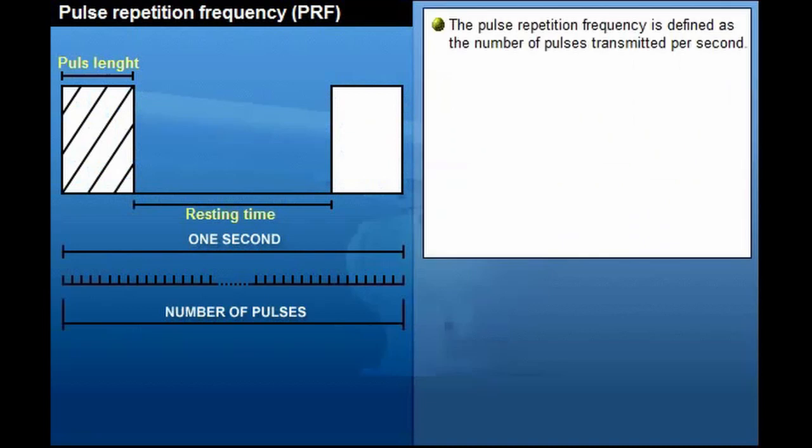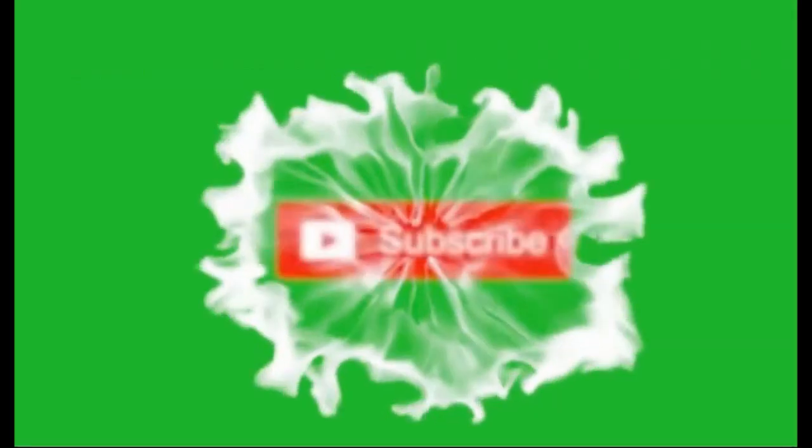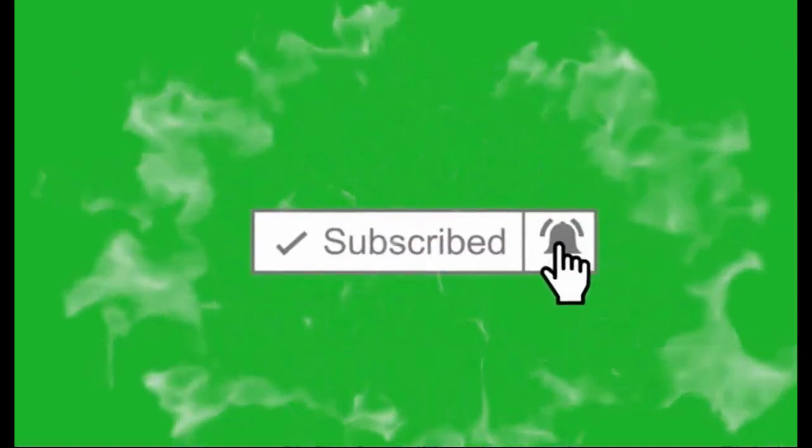The pulse repetition frequency is defined as the number of pulses transmitted per second. Long pulse equals low PRF, while short pulse equals high PRF. Long pulse means more power and longer radar range, but less resolution in range. Short pulse means weaker pulse, less radar range, but better resolution in range. Selection of pulse length may affect the radar range resolution in a negative way.